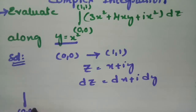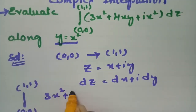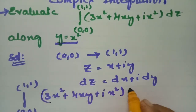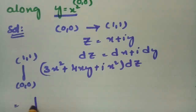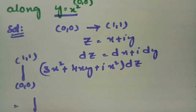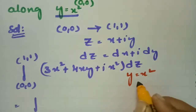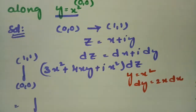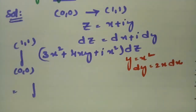The integral is from (0,0) to (1,1) of 3x² + 4xy + i·x² dz. I am going to transform this in terms of x. It is given that along y = x², so dy = 2x dx.